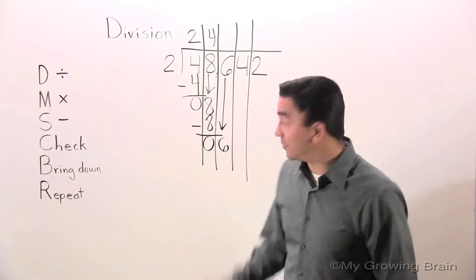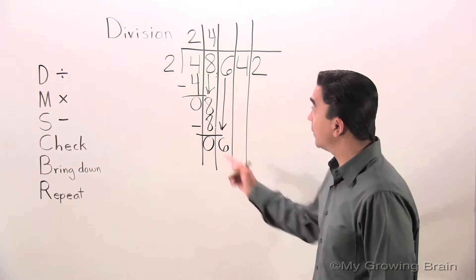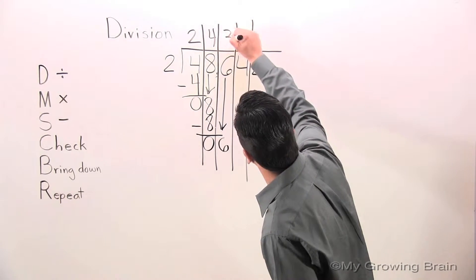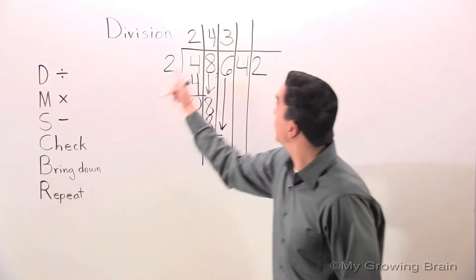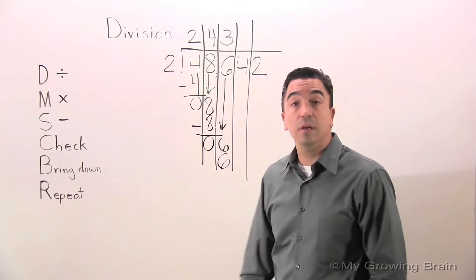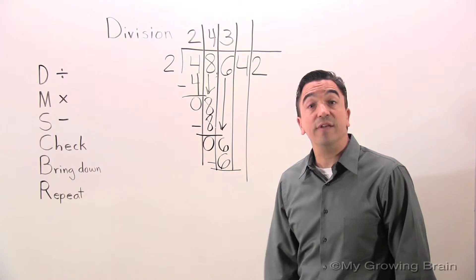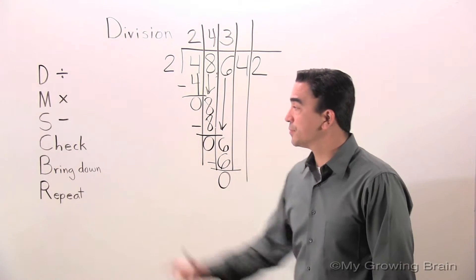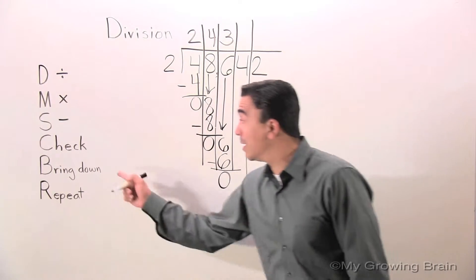Repeat the process. All the way back up, divide. 6 divided by 2 equals 3. Multiply. 2 times 3 equals 6. Next step: subtract. 6 minus 6 equals 0. Check. 0 is less than 2. Keep on going. Bring down.